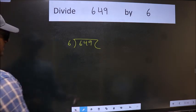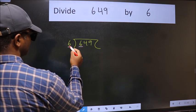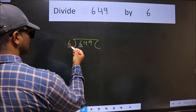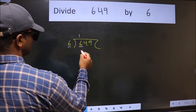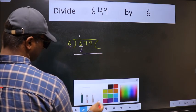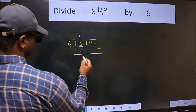Next, here we have 6 and 6 here. When do we get 6 in the 6 table? 6 ones is 6. Now we should subtract. We get 0.